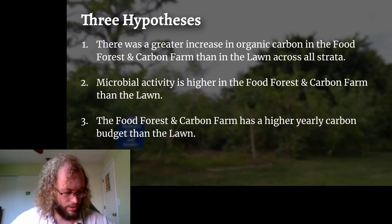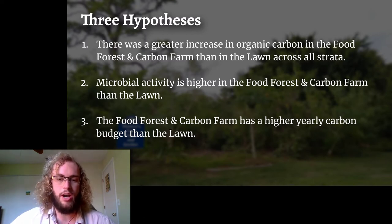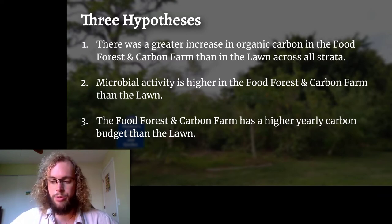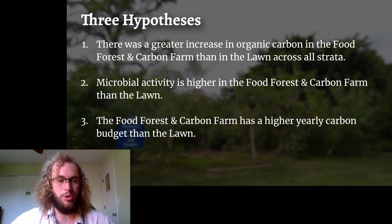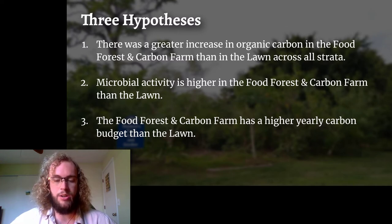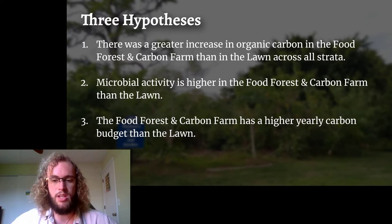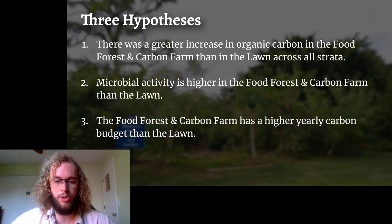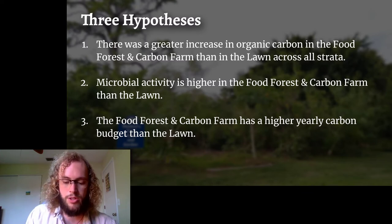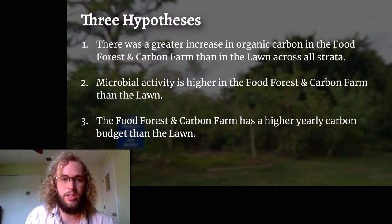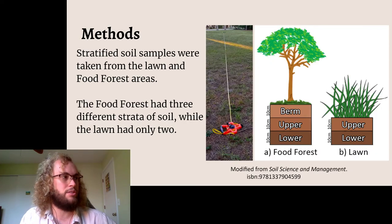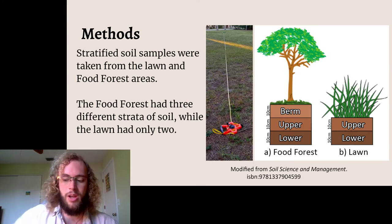My second hypothesis was that microbial activity was also higher in the food forest than it was in the lawn area. Microbes form symbiotic relationships with many plants and assist in nutrient access and uptake, which can help increase their overall growth rates. My final hypothesis was that the food forest has a higher yearly carbon budget than the lawn, meaning that the food forest both takes in more carbon through photosynthesis and releases more carbon through microbial activity every year than the lawn. So armed with these hypotheses, I set out into the field to take some measurements that would provide evidence to support or refute these hypotheses.